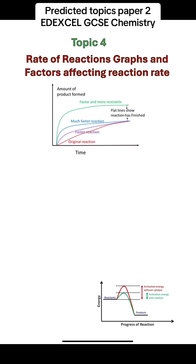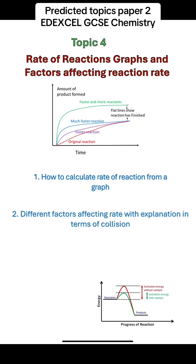Topic 4 is the rate of reactions graph and the factors affecting reaction rate. You should be able to calculate the rate of reaction from the graph by drawing the tangent at a certain point and calculating the gradient. The different factors affecting rate are explained in terms of collision theory. Increased temperature increases the rate because of more frequent collisions and also because more collisions are effective due to the higher energy. Concentration in the case of solutions also increases the frequency of collisions.